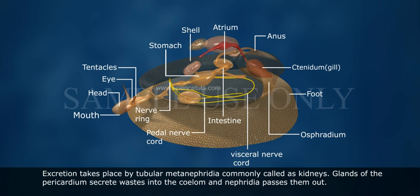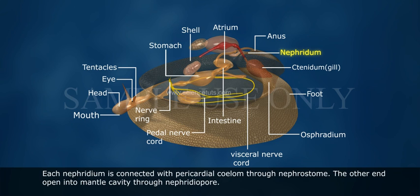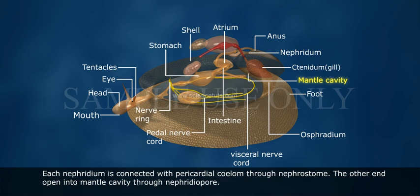Excretion takes place by tubular metanephridia, commonly called kidneys. Glands of the pericardium secrete wastes into the coelom, and nephridia pass them out. Each nephridium is connected with the pericardial coelom through the nephrostome, and the other end opens into the mantle cavity through the nephridiopore.